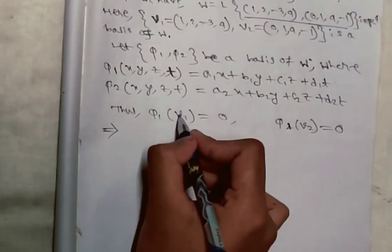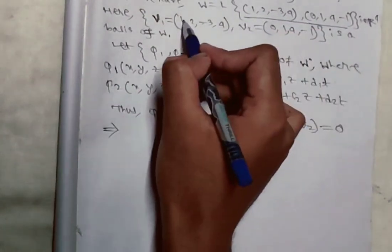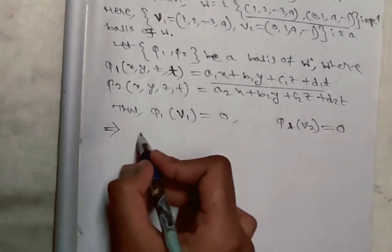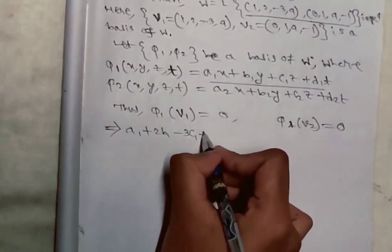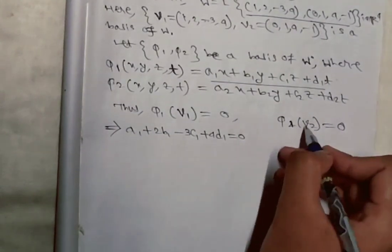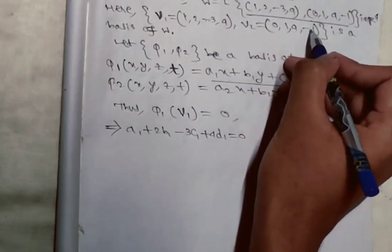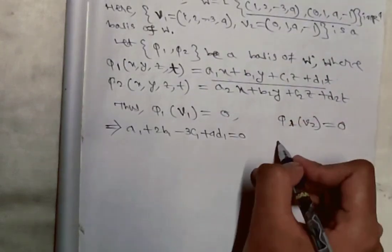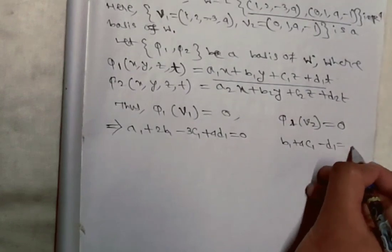Putting the values of V₁ = (1,2,-3,4) into the first equation gives: a₁ + 2b₁ - 3c₁ + 4d₁ = 0. Similarly, putting V₂ = (0,1,4,-1) into the equation gives: b₁ + 4c₁ - d₁ = 0.